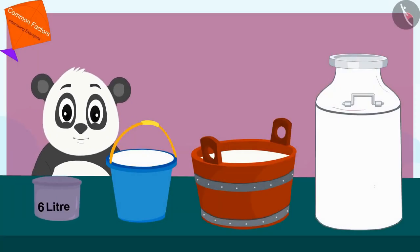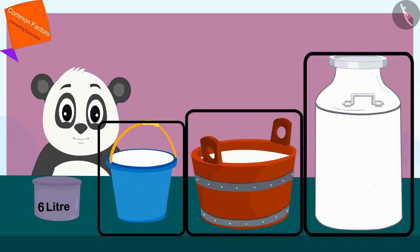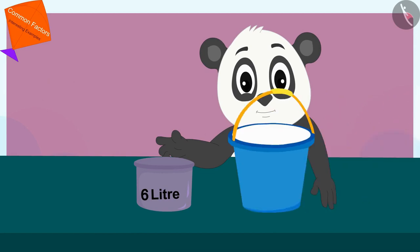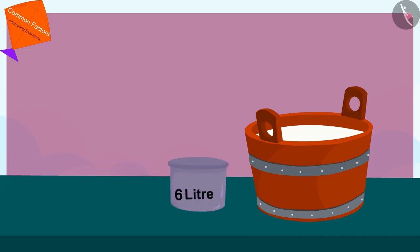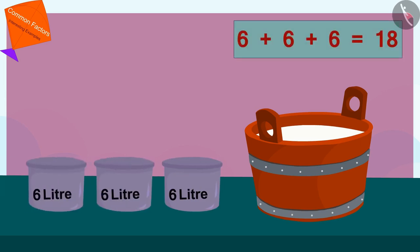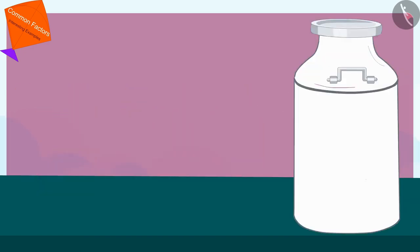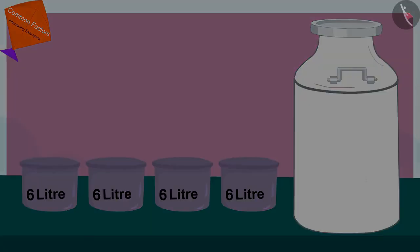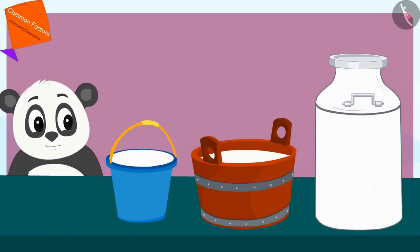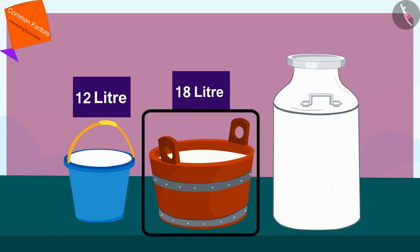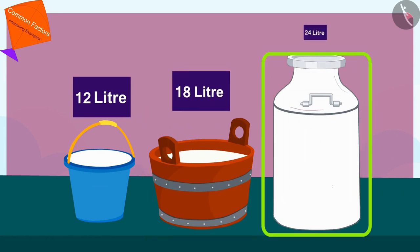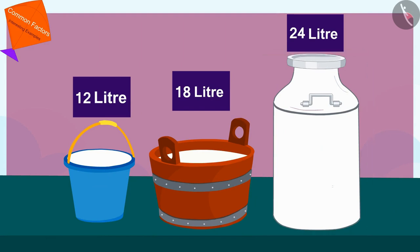Golu began measuring the milk filled in all those pots with a 6-liter vessel. To measure the milk filled in this vessel, Golu used that 6-liter pot twice. For this pot, he used the 6-liter pot three times. And to measure the milk filled in this pot, Golu used his 6-liter vessel four times. In this way, Golu came to know that 12 liters of milk are filled in this pot, 18 liters in this one, and 24 liters of milk in this pot.